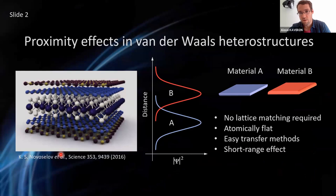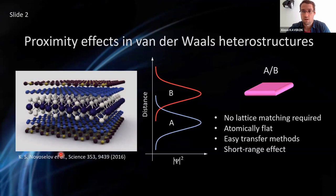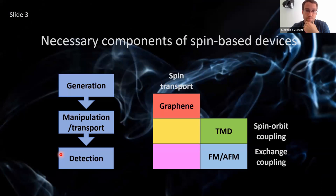The first thing I have to mention is proximity effects. Basically, we can combine two materials with two different properties, two different functionalities, into a single material that is going to have a functionality broader than any of the starting materials. So how can we use proximity effects for the needs of spintronics?